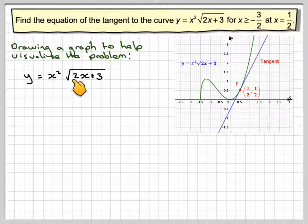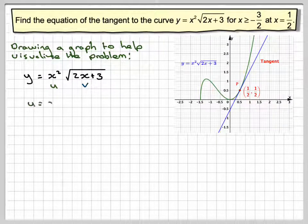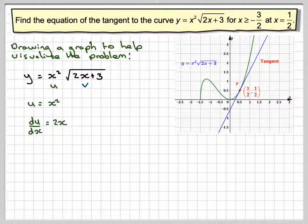We've got y equals x squared times the square root of 2x plus 3. Let's type uv for the product rule. So u equals x squared, we differentiate that, du by dx we get 2x.